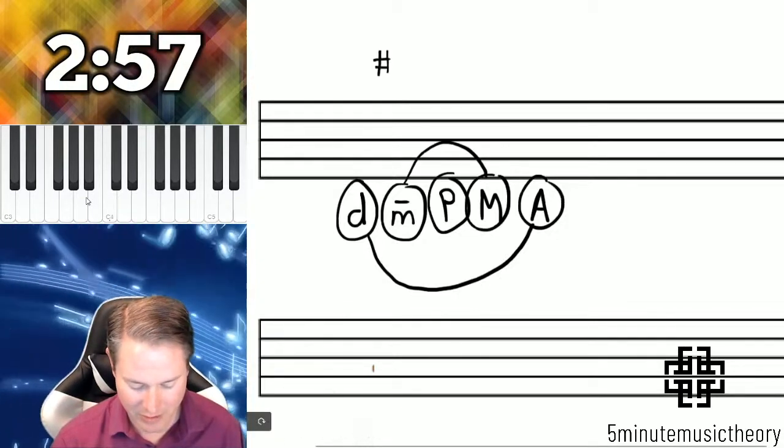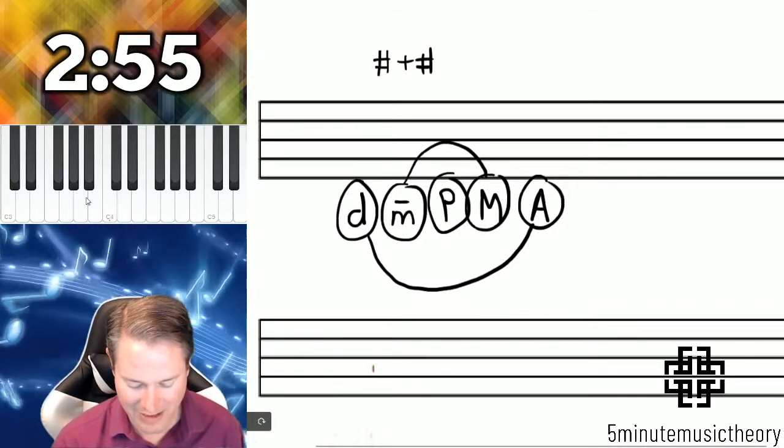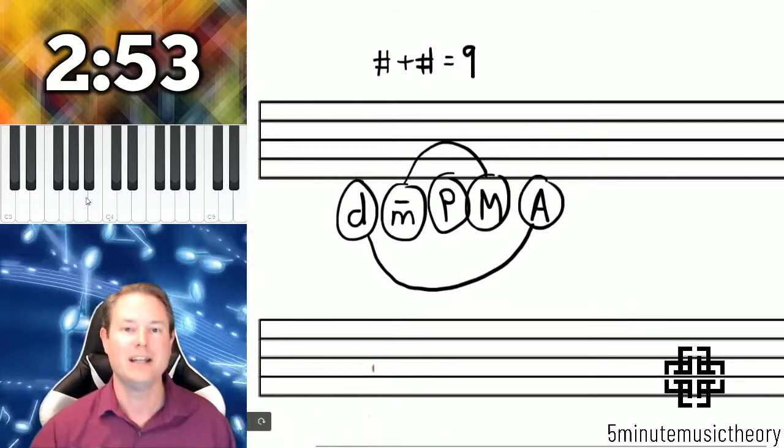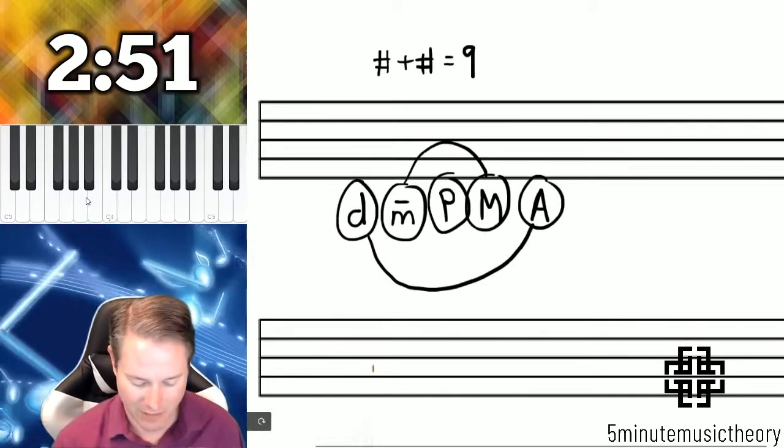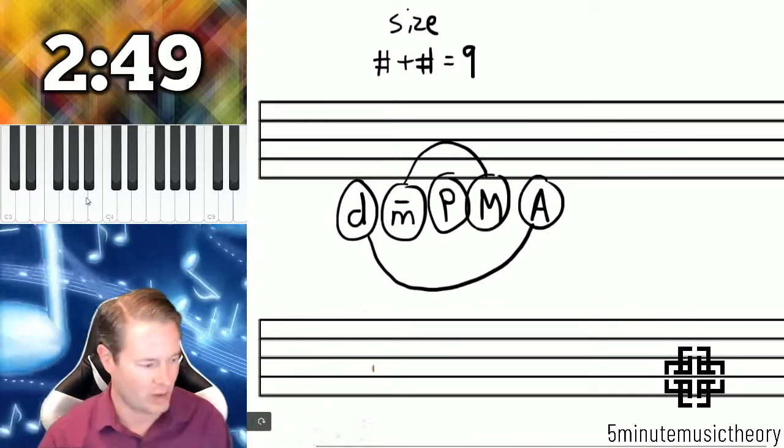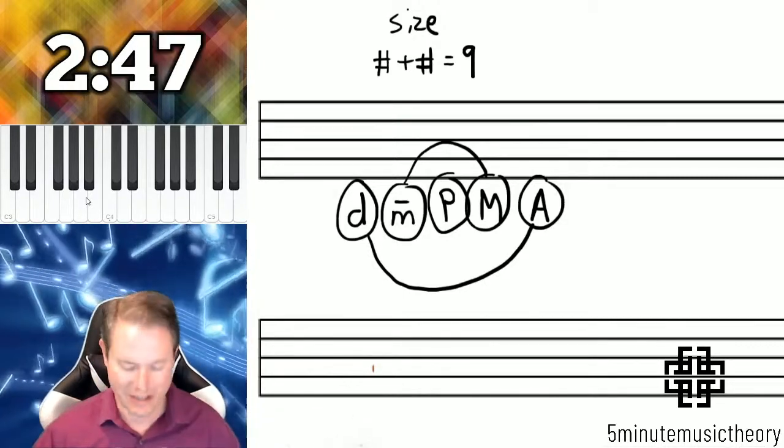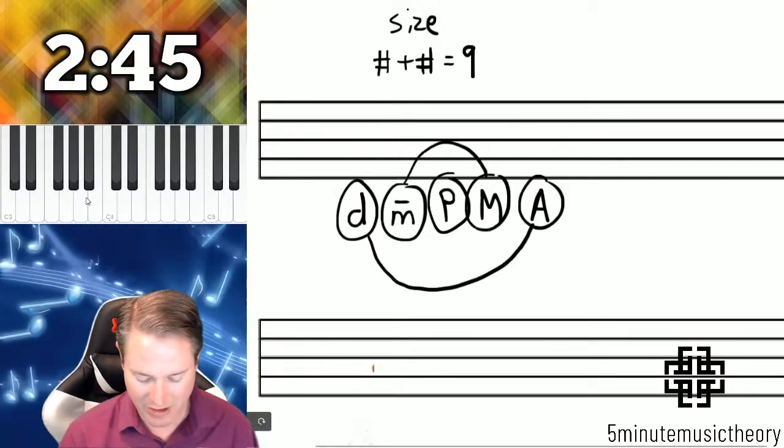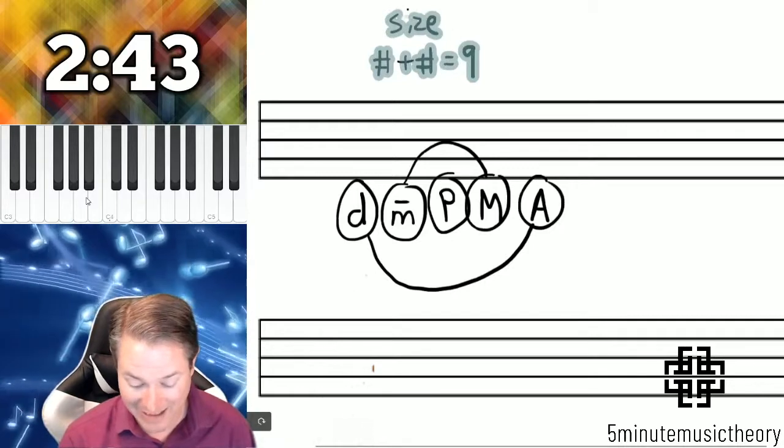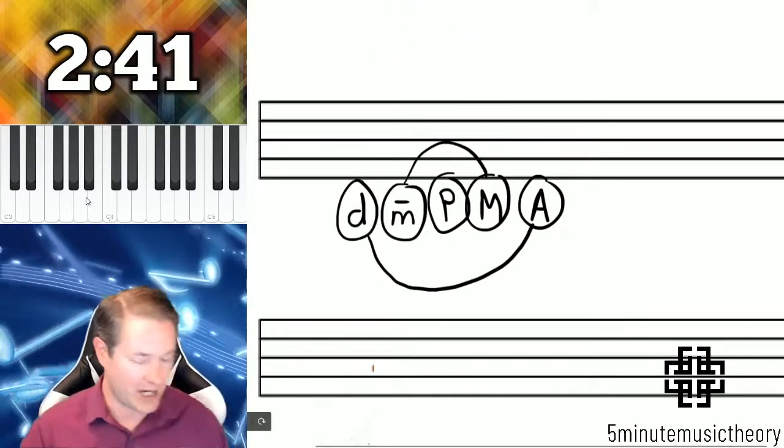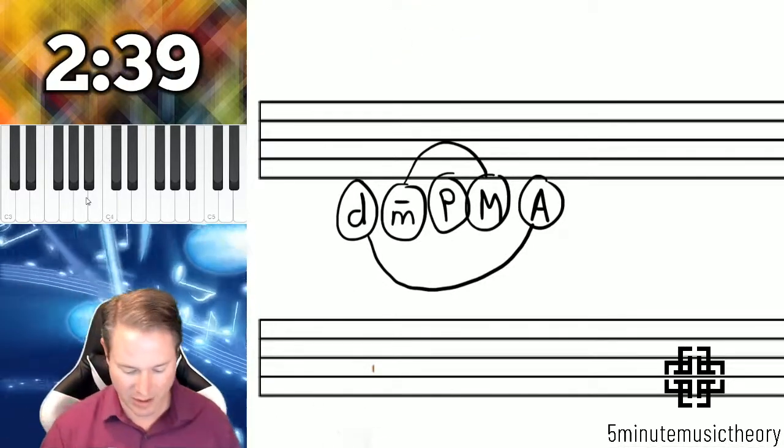And then the numbers will always equal nine, and that's the sizes of the intervals. So the size is always equal nine, and the qualities are opposite of each other. So keeping that in mind, this is quite easy. And then I'll show you if we have time, how it sort of looks on the staff.